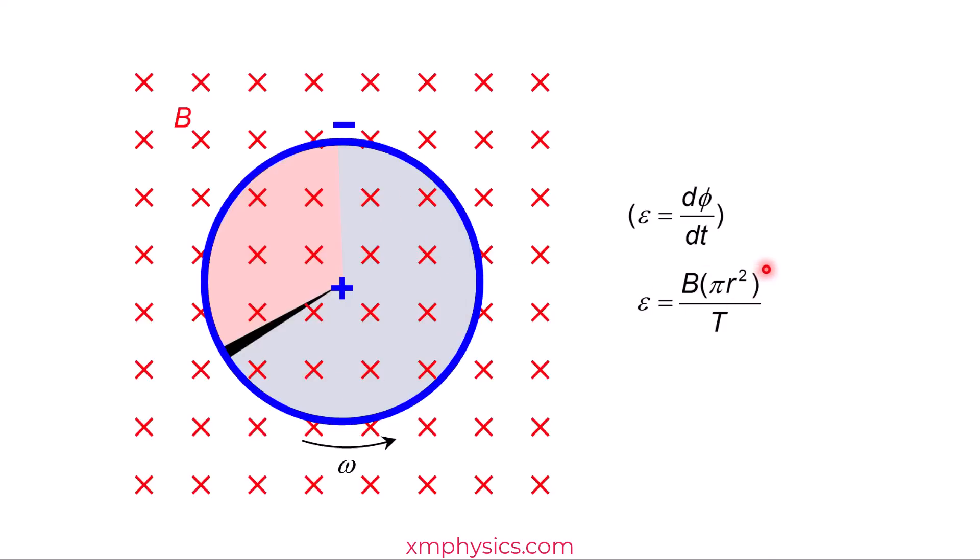So one πr². So the amount of flux cut during one revolution is B times the circular area. And this is completed in one period. So writing πr² as the area and writing 1 over T as frequency, we get the same formula: BAf. Alright, that's all. Ta-ta!